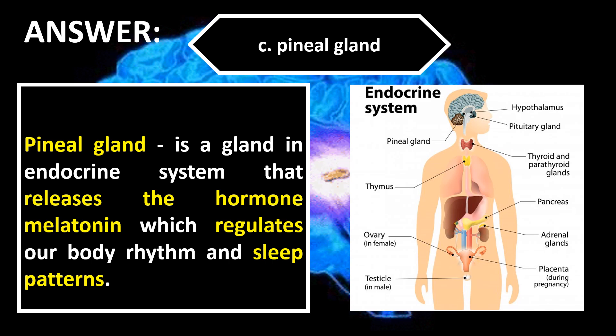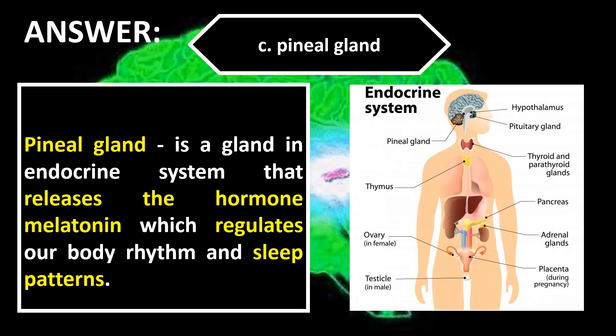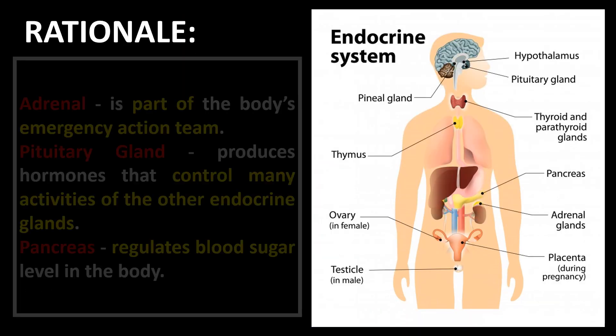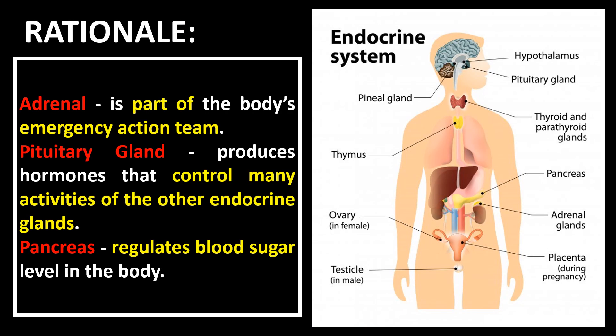The correct answer is letter C, Pineal gland. The pineal gland is a gland of the endocrine system that releases the hormone melatonin, which regulates our body rhythm and sleep patterns. The adrenal gland is part of the body's emergency action team. The pituitary gland produces hormones that control many activities of the other endocrine glands. The pancreas regulates blood sugar levels in the body.